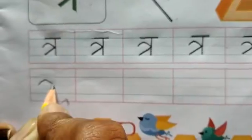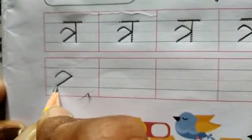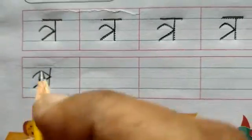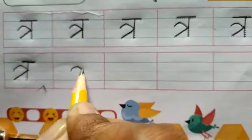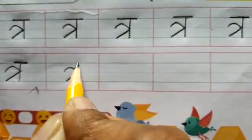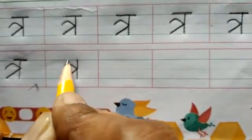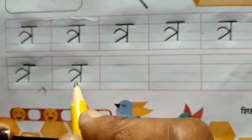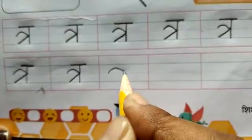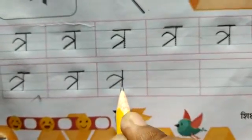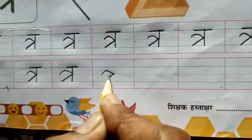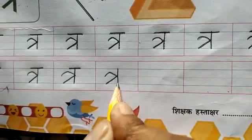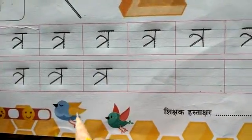Second blue line se, and upar choti si slipping line, as a joint kerke, as a crossing line, and first to third line tak standing line, and upar choti si slipping line. Tra. As a joint kerke, as a crossing line, and first to third line tak, as a standing line, and upar choti si slipping line. Tra. As a joint kerke, as a crossing line, and upar choti si slipping line. Tra.